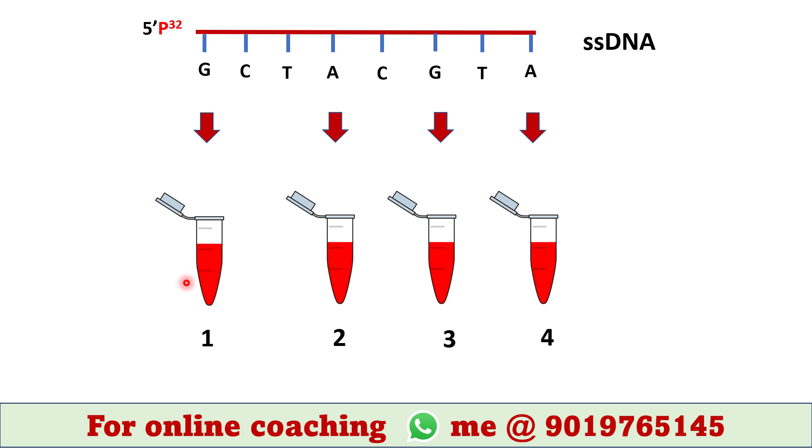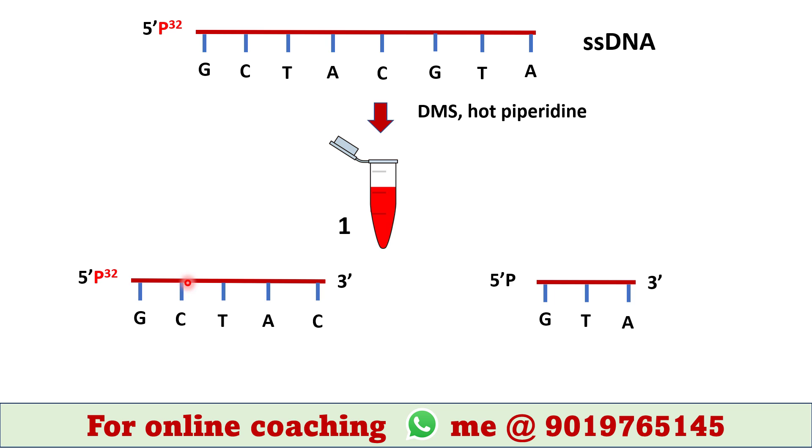For example, in tube 1, we have dimethyl sulfate (DMS) and hot piperidine. These chemicals cleave DNA sequence at guanine, hence following fragments are generated in tube 1.